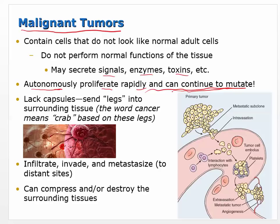Malignant tumors lack capsules — they aren't encapsulated like benign tumors. They send out little legs, which is how cancer got its name from the crab, because it looks like a crab. This infiltration makes it very difficult to remove surgically because it's hard to see where the edges of the cancer are. They can infiltrate, invade, and metastasize to distant sites, and can also destroy surrounding tissues through infiltration.